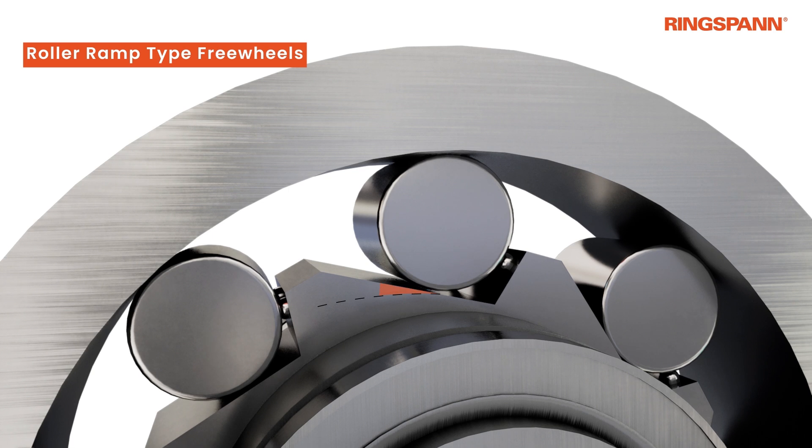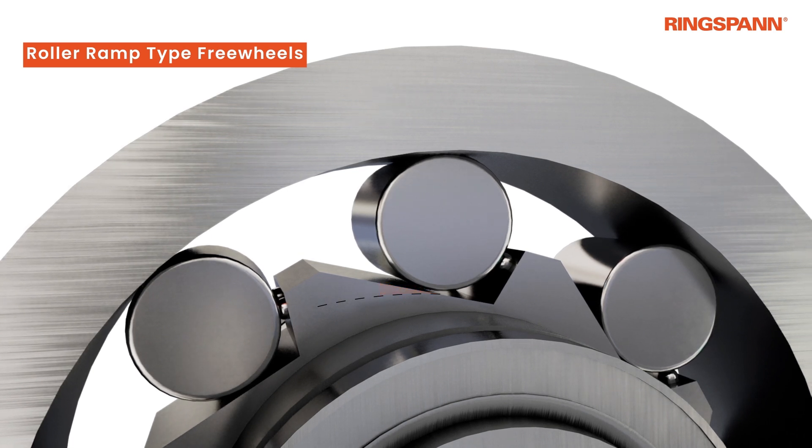In opposition to Sprague freewheels, the clamping wedge is provided by the ramps on either the inner or outer ring.